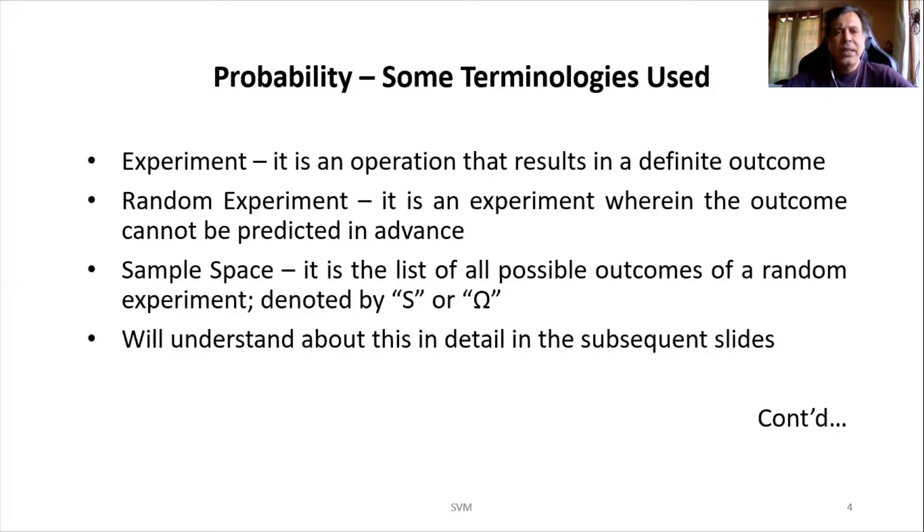Provided that coin is an unbiased coin. It means it should definitely have one side as head and it should be a perfect circle. And when I toss, it should not stand. It should fall very clearly so that only one side of the coin will occur. We call such a coin an unbiased coin. So once I toss a coin, I'm sure that definitely an outcome is expected. That outcome can be either a head or it can be a tail. So we can consider this particular operation of tossing a coin as an experiment.